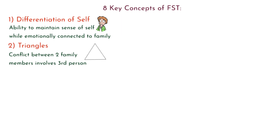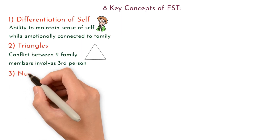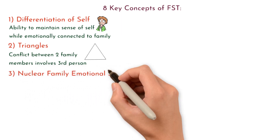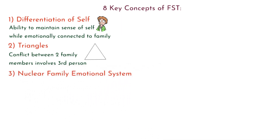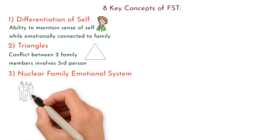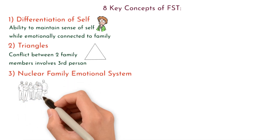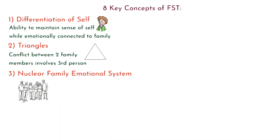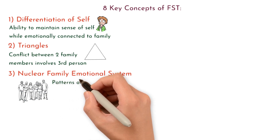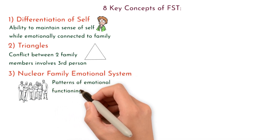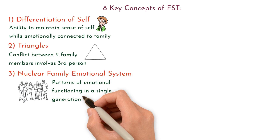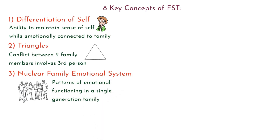3. Nuclear family emotional system. This concept describes the patterns of emotional functioning in a single-generation family, including marital conflict, dysfunction in one spouse, impairment of one or more children, and emotional distance.